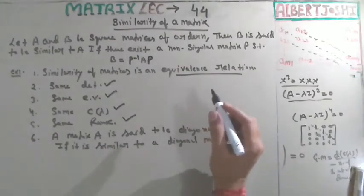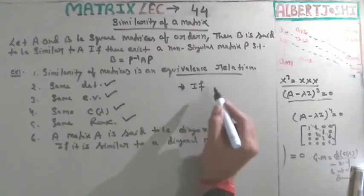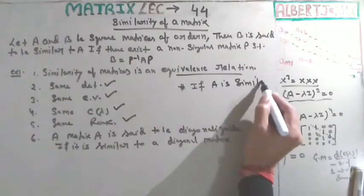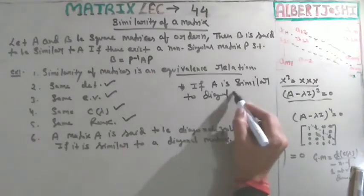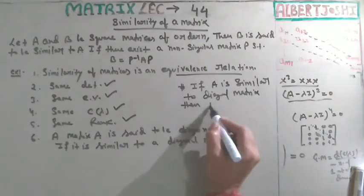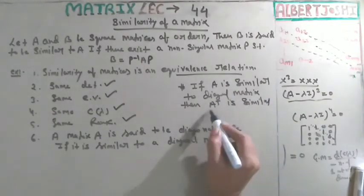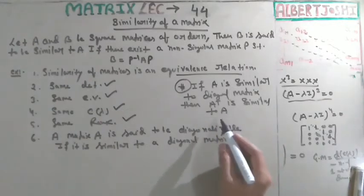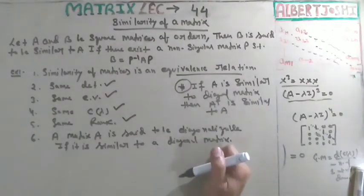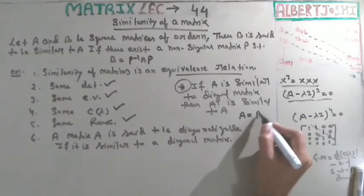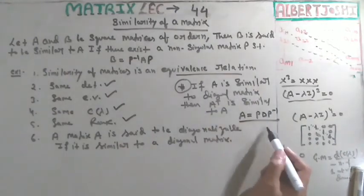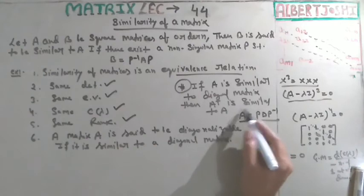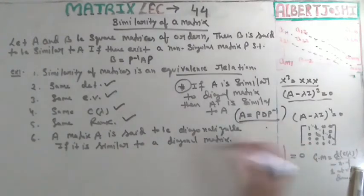I am talking about the similarity of matrices in relation to a diagonal matrix. If A is similar to a diagonal matrix, then A transpose is also similar to A. It means if A is similar to a diagonal matrix, that means A equals P D P inverse. Taking transpose of both sides gives us that A transpose is similar to A. This is a straightforward result.